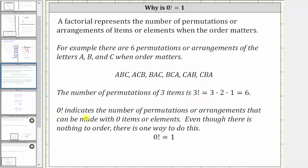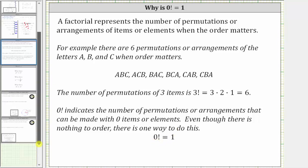Which means zero factorial indicates the number of permutations or arrangements that can be made with zero items or elements. Even though there is nothing to order, there is one way to do this, and therefore zero factorial is equal to one.